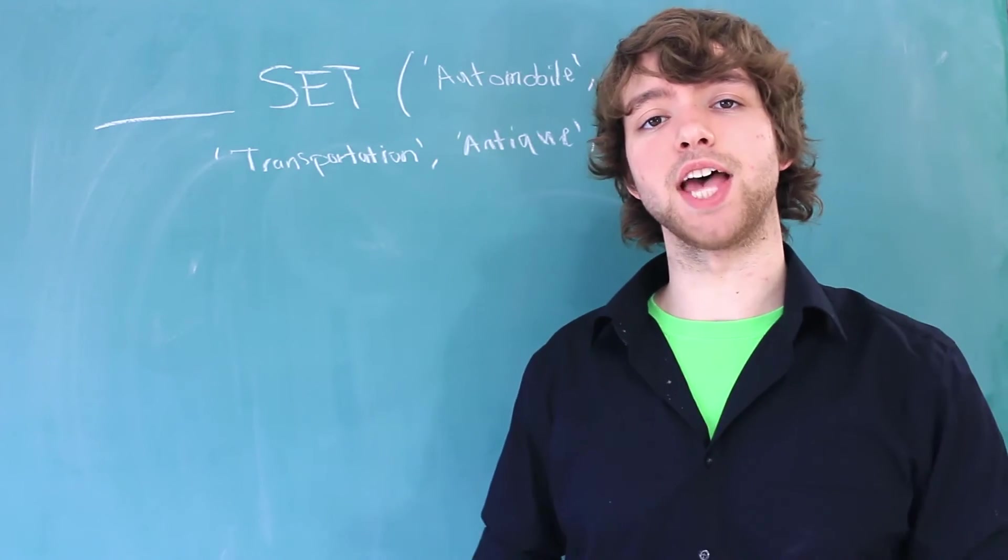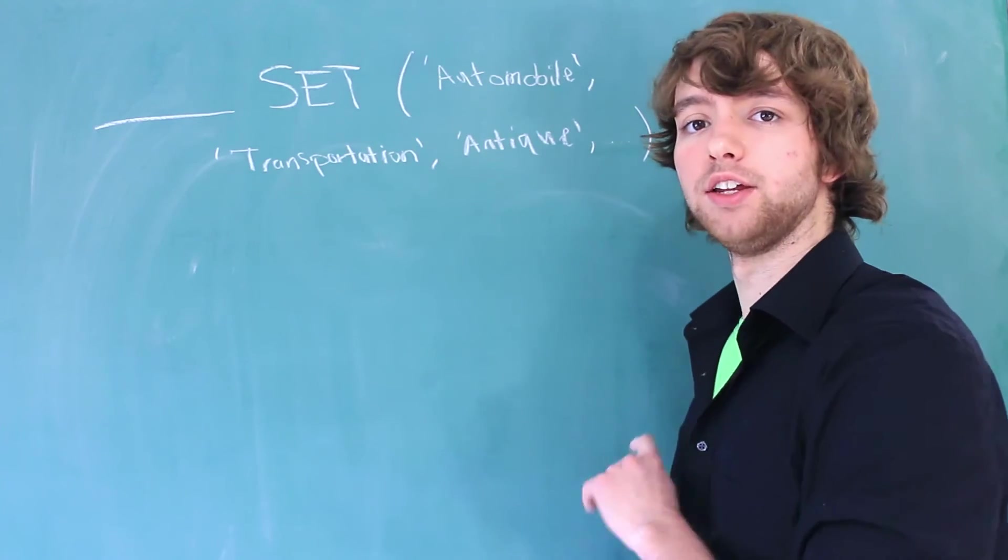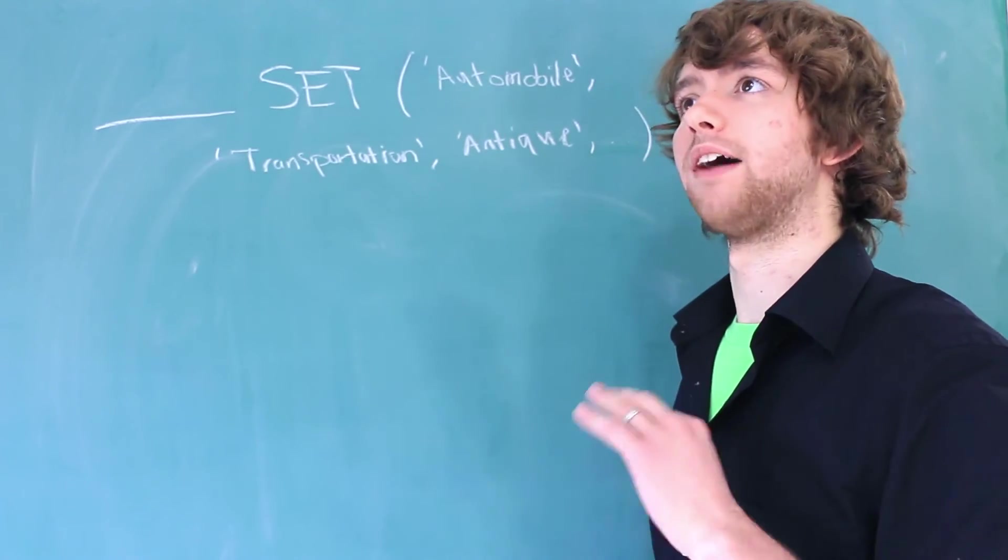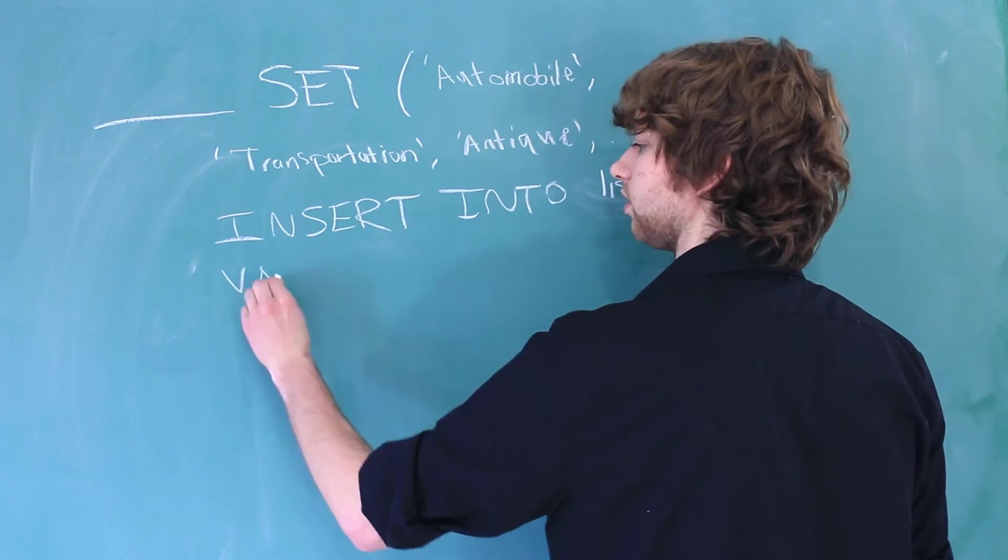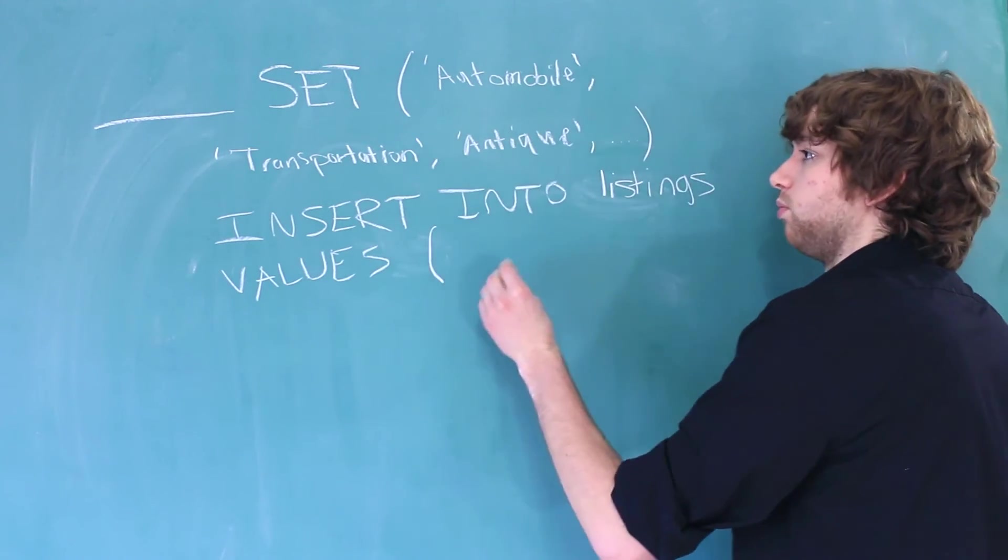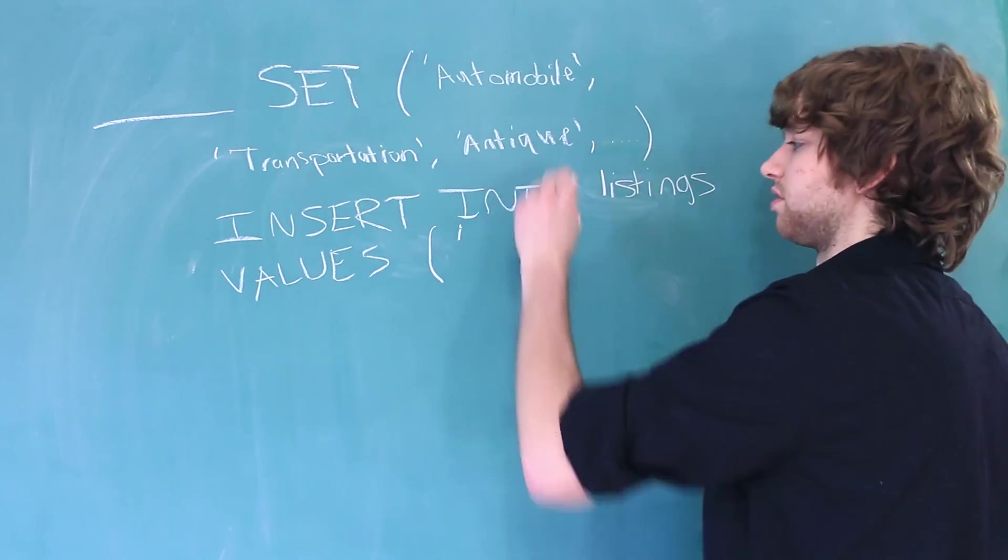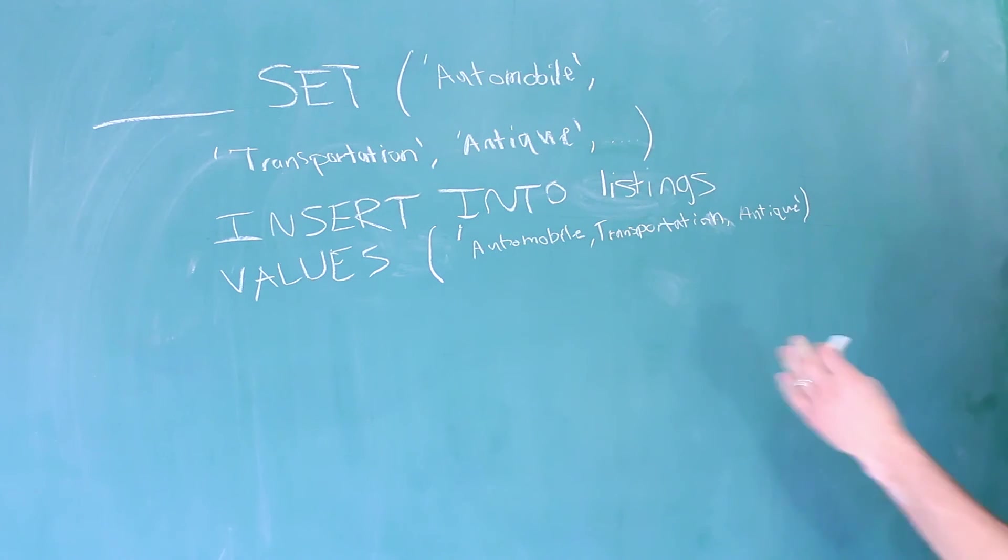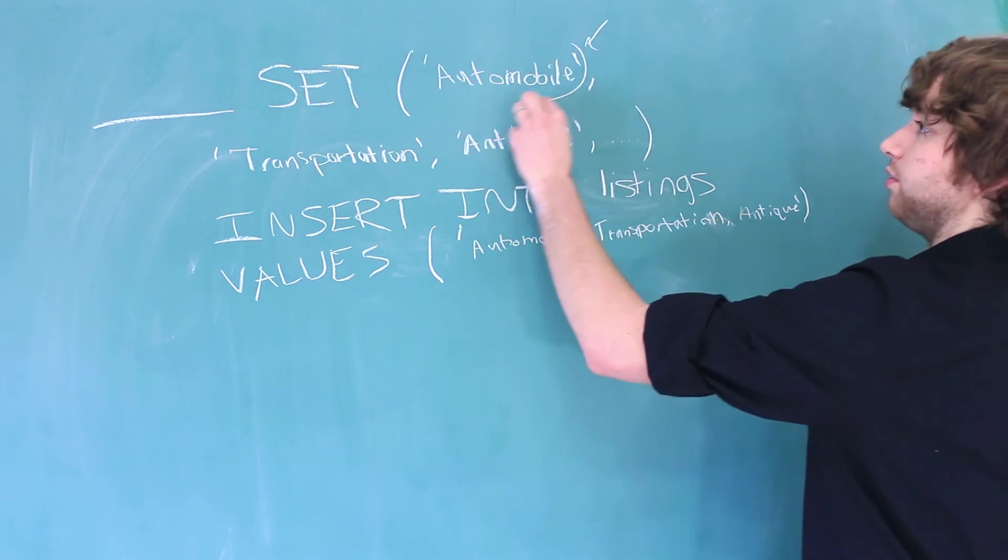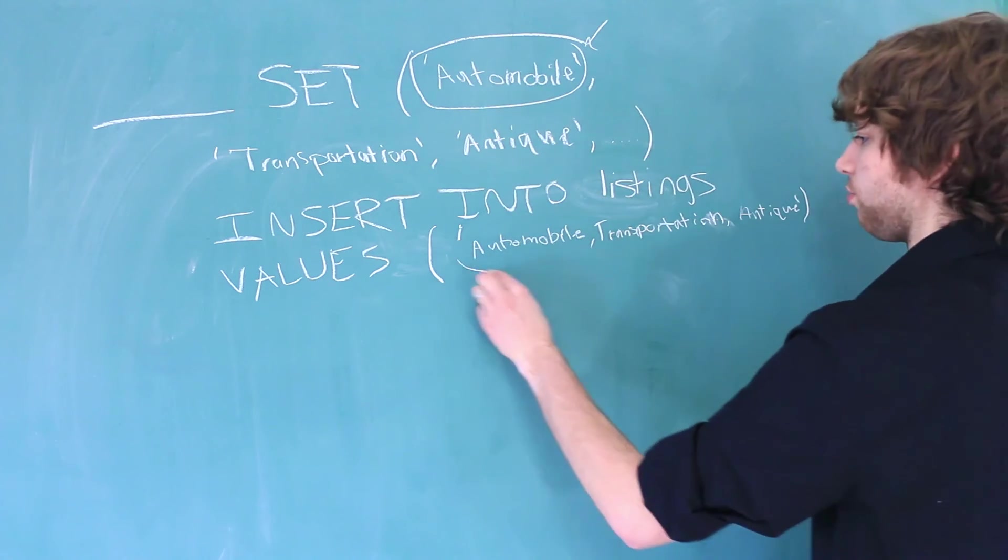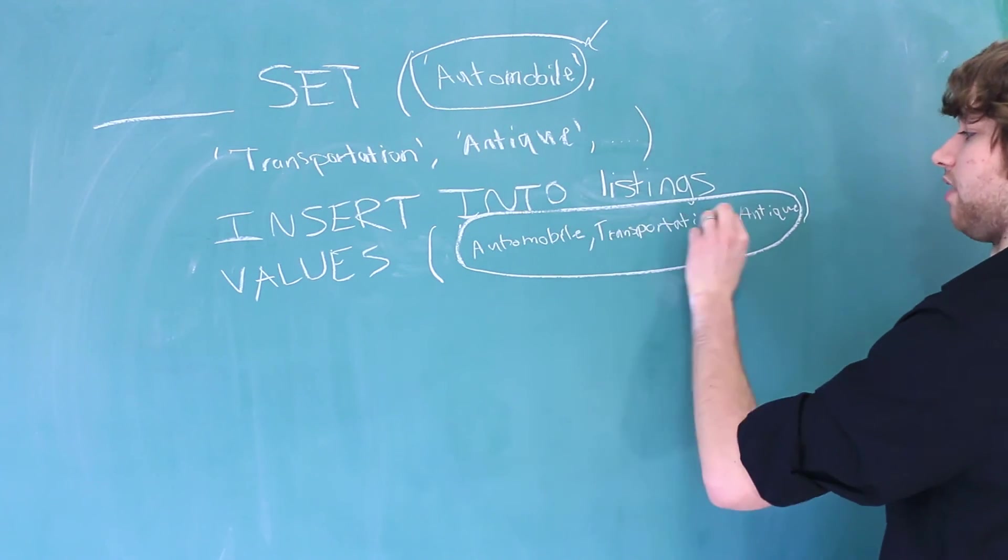Now the difference between set and enum shows up when we are inserting data. So let's say we are inserting this data into the listings table. So we have one listing for this car. Insert into listings, values, and then once we got to that column, what we would do is we would quote and then put all of the values separated by commas. And there you go. Now notice the difference here. In this situation, we quote every single value. But for this situation, we quote the entire thing only one time, and then separate each value by commas.